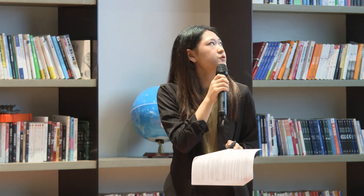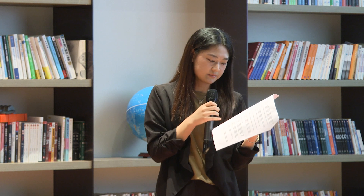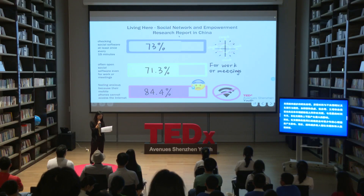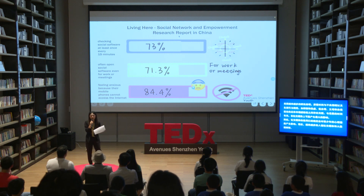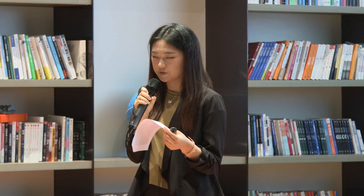Meanwhile, social media can cause anxiety among young people. Research reports that in China, up to 73% of young people check social software at least once every 15 minutes, and 71.3% of teens often open social apps even during work or meetings. Furthermore, 84.4% of teens feel anxious when their mobile phones cannot access the internet. A growing body of research in the U.S. has shown an association between screen time and adverse mood — negative behaviors such as depression, anxiety, low self-esteem, and lower overall well-being — with time spent on social media likely having the biggest impact.